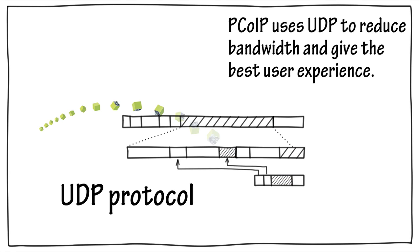For that reason, PCoIP uses UDP — the same protocol as Voice over IP and IPTV — to reduce bandwidth requirements and deliver the best interactive user experience for the network bandwidth that's available.